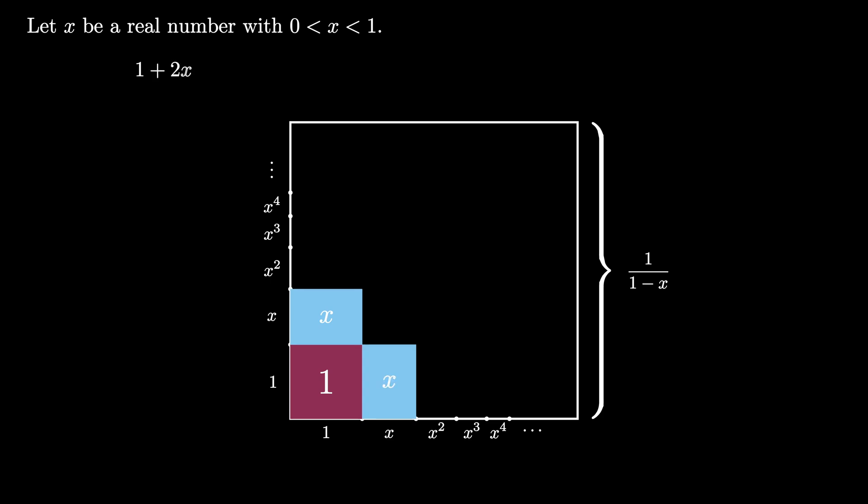On top of those two rectangles, we can shade in a 1 by x squared rectangle, an x by x rectangle, and an x squared by 1 rectangle. Together, these 3 rectangles enclose an area of 3x squared.